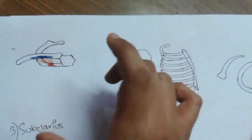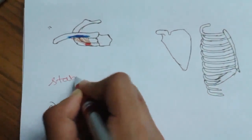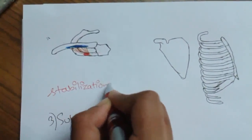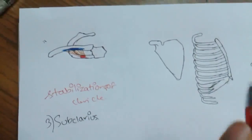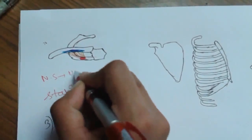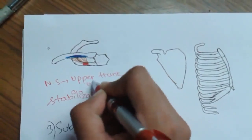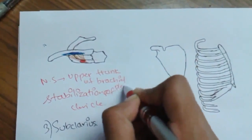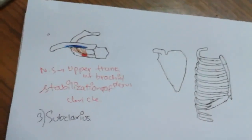The main action of subclavius is stabilization of the clavicle. It brings the clavicle downward when it contracts, helping to stabilize it. The nerve supply is from the upper trunk of the brachial plexus.